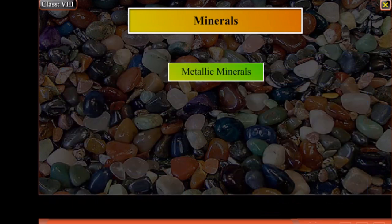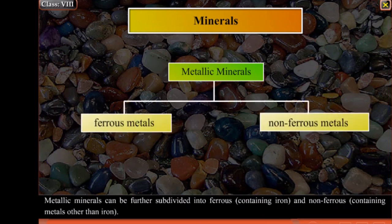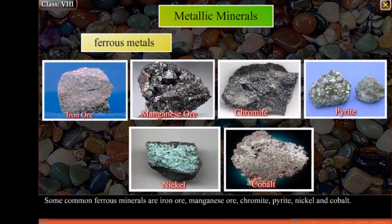Metallic minerals can be further subdivided into ferrous, containing iron, and non-ferrous, containing metals other than iron. Some common ferrous minerals are iron ore, manganese ore, chromite, pyrite, nickel and cobalt.